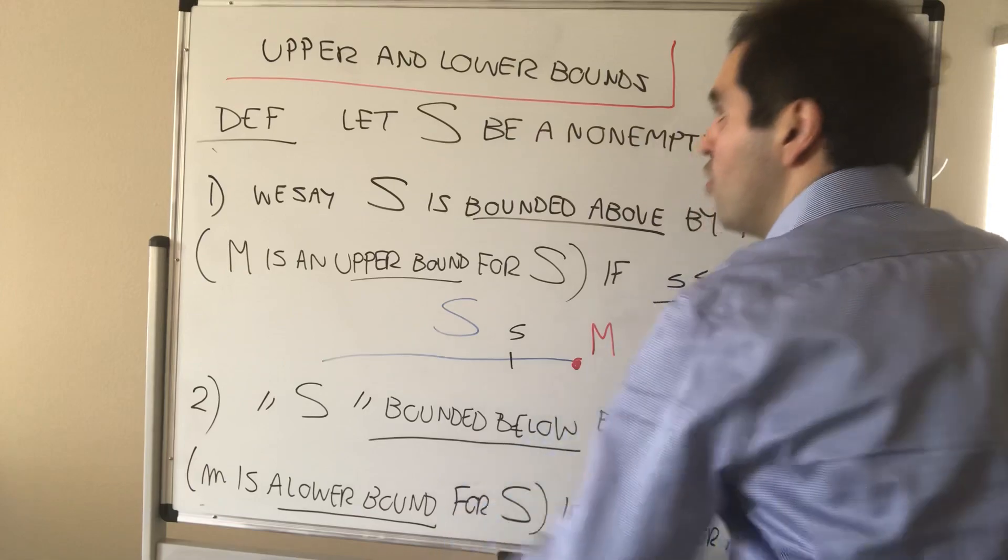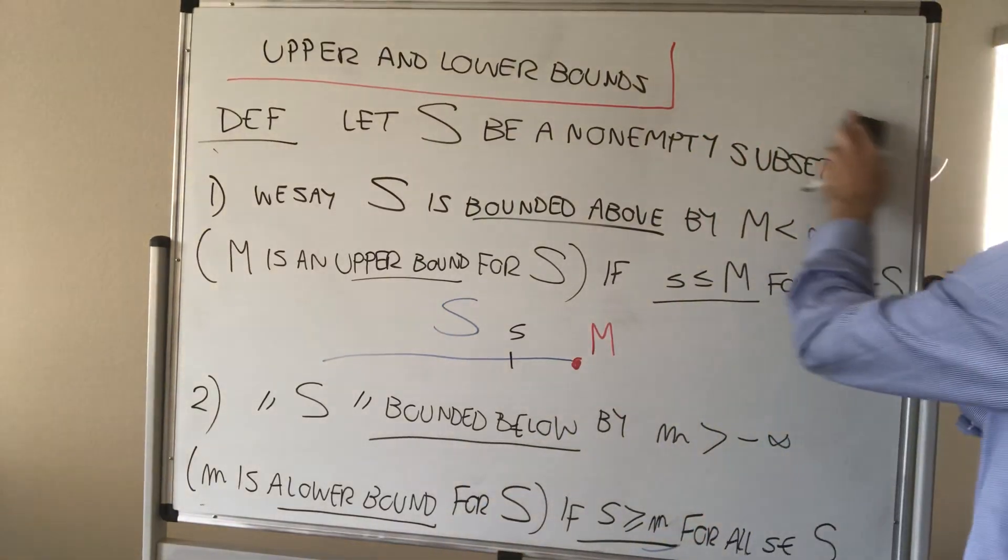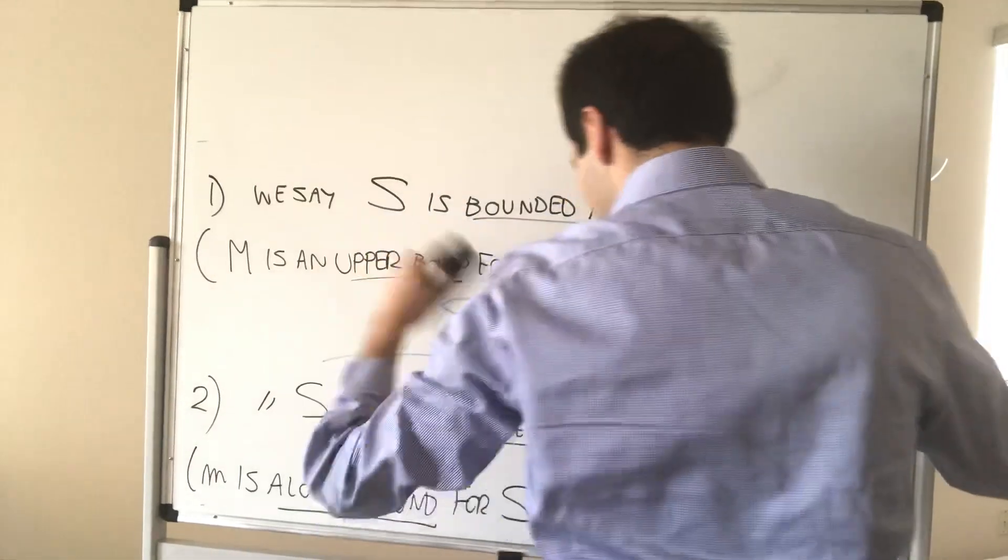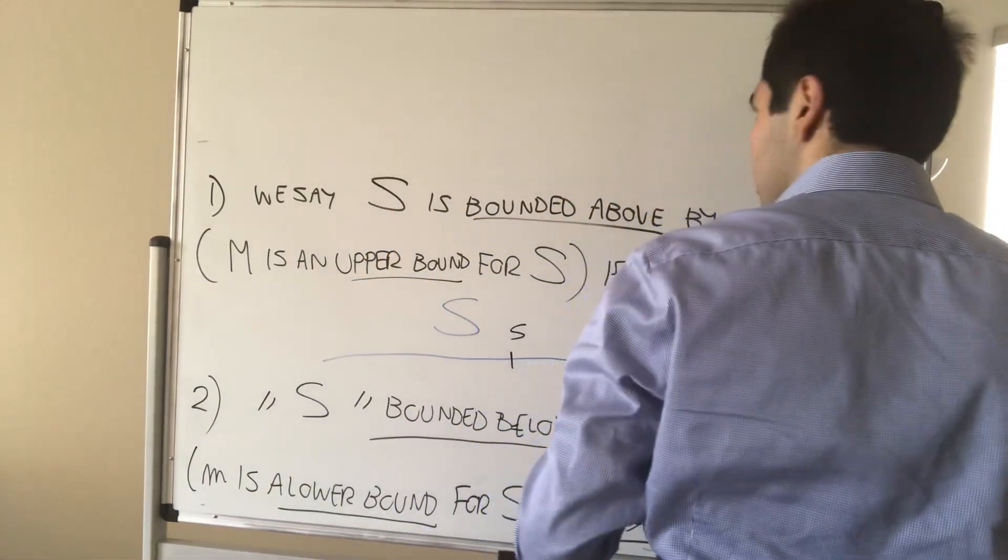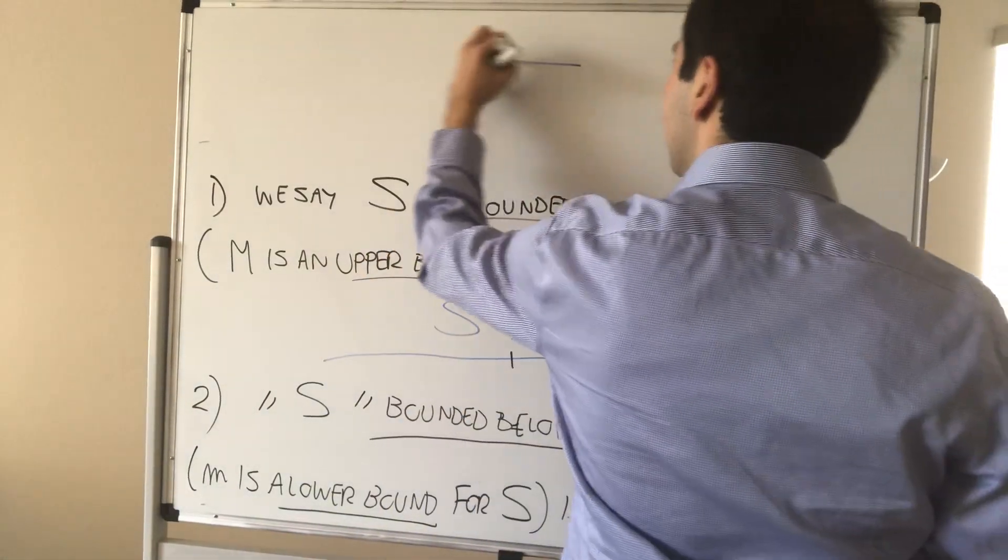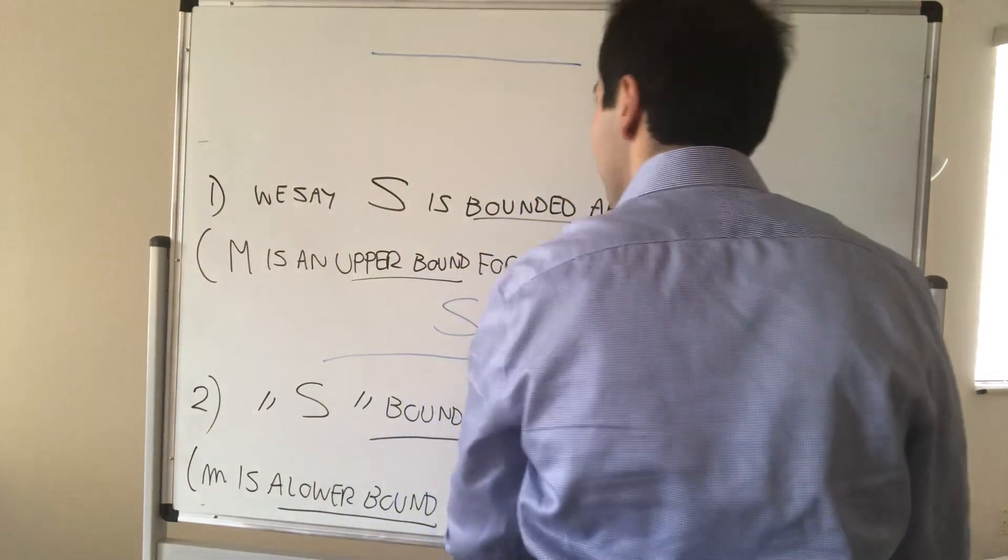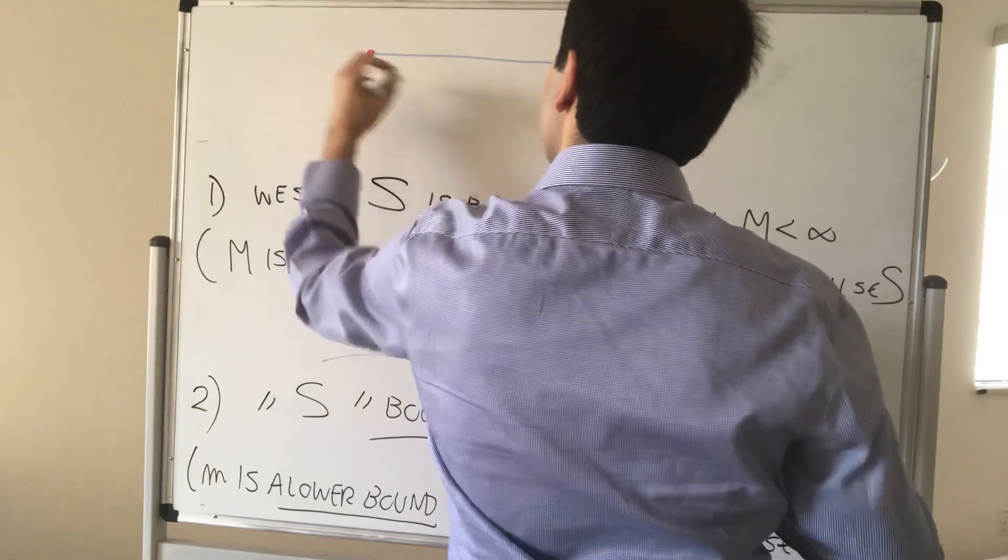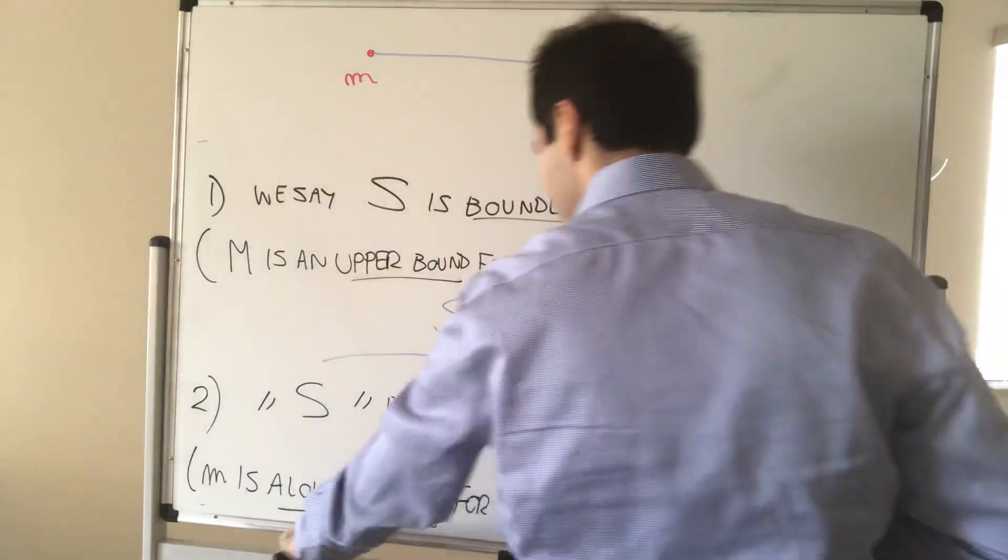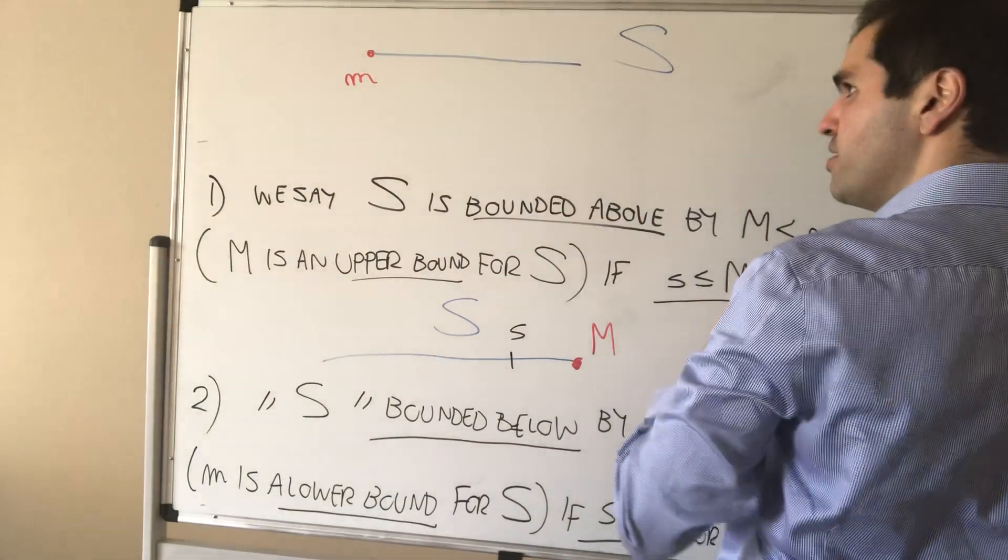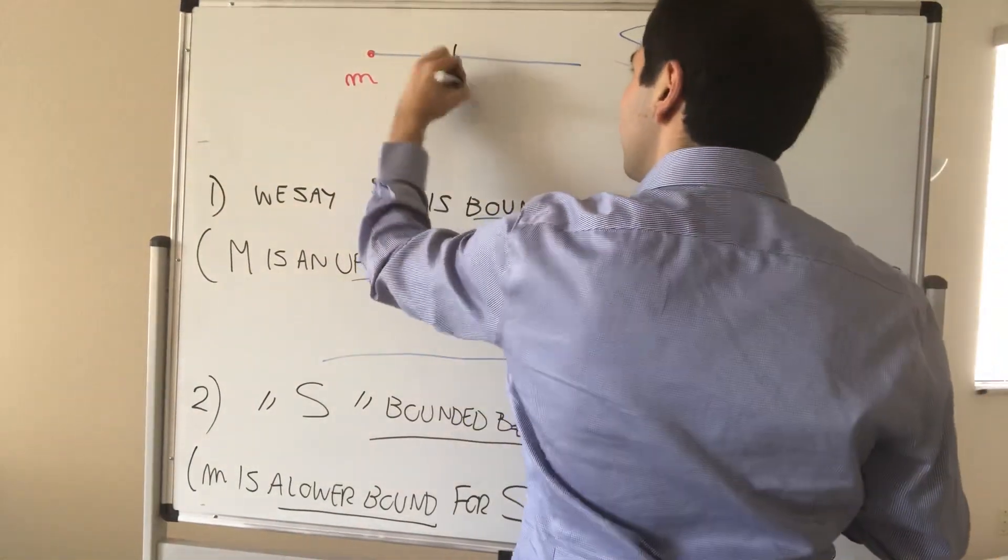Think of the lower bound as being a floor to your interval or to your set. So, here's again another example. You have this is little M and this is your set S. And what we're saying is no matter which number you pick in S, it's guaranteed to be greater or equal to M.